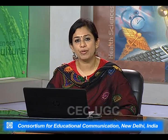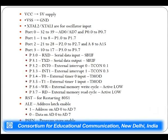The 8051 is a 40-pin IC. Pins 1 to 8 are dedicated to Port 1; pin 9 is the RST (reset) pin; pins 10 to 17 are dedicated to Port 3; the crystal oscillator is connected between pins 18 and 19; pin 20 is ground; pins 21 to 28 are Port 2; pins 29 to 31 are for dedicated operations; pins 32 to 39 are Port 0; and pin 40 is VCC.